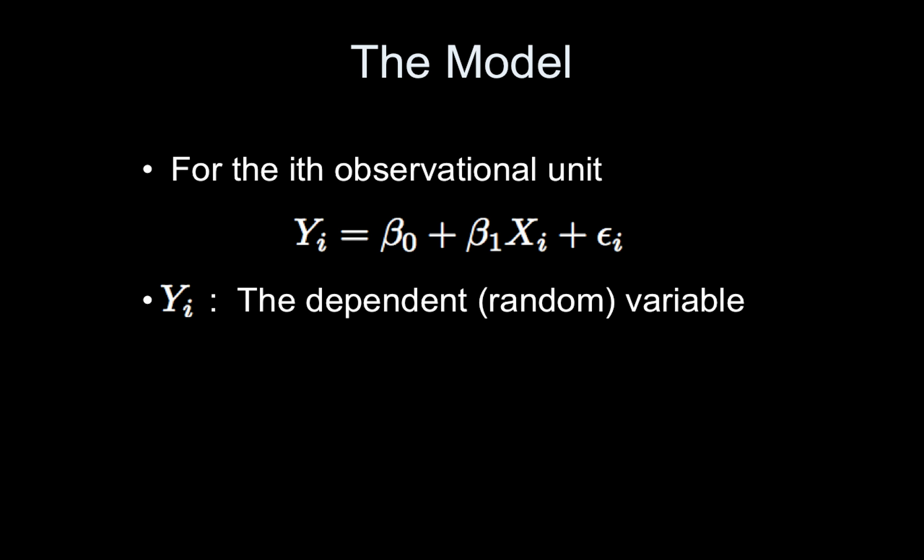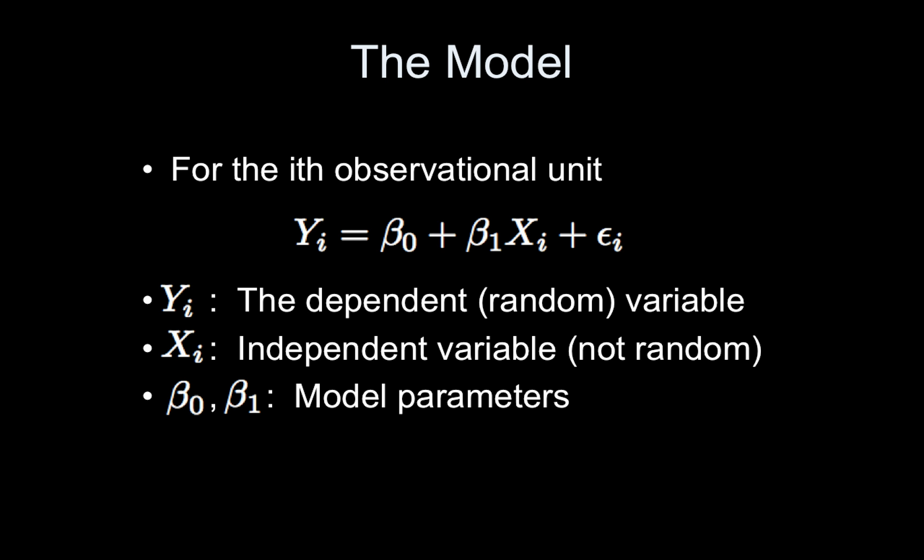Yi is the dependent or random variable, there are other words for it, those are just two. Xi is the independent variable and it is considered fixed, so it's not random. The model parameters beta naught and beta 1, and those are two of the parameters but again that epsilon contains our variance parameter which is an important player.